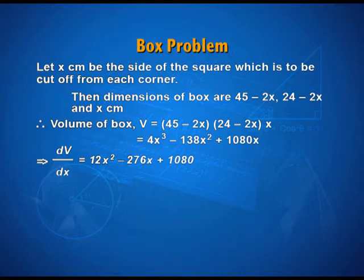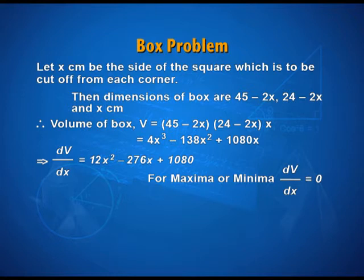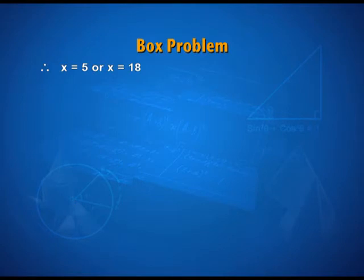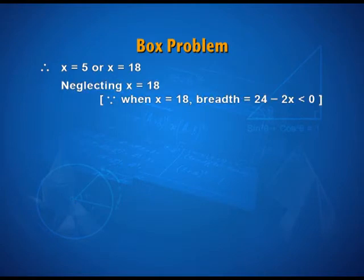In this case, derivative turns out to be a quadratic which is going to be maxima minima when it is 0, resulting in two values of x: x is 5 or x is 18. Now, x equal to 18, is that a possible value? No. Why? Because when the value of x is 18, breadth becomes less than 0, not a possibility. So, we reject or neglect x as 18 and concentrate on x equal to 5.